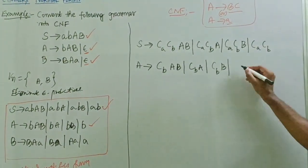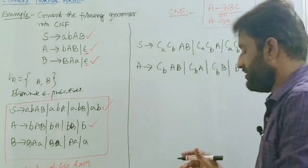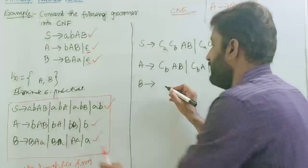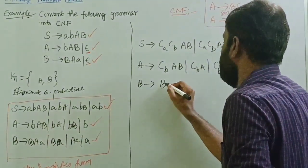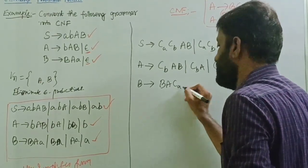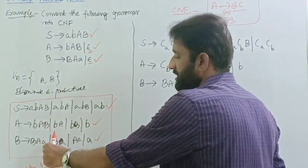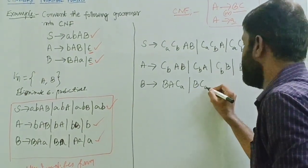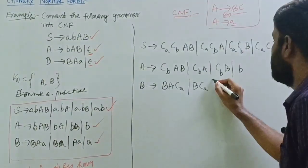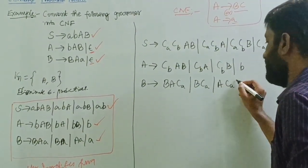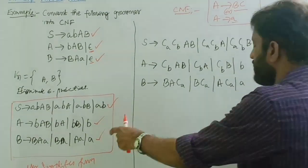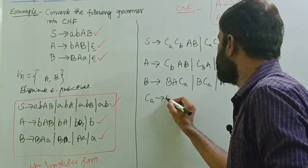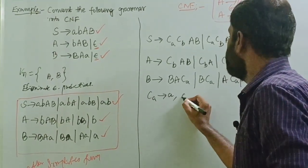Take the next production: B tends to BA | A. Introduce new non-terminal CA to replace small 'a'. So B tends to B CA, slash B CA, slash capital A CA, slash A. A is already in Chomsky Normal Form. What are the new non-terminals we introduced? CA tends to small 'a', and CB tends to small 'b'.